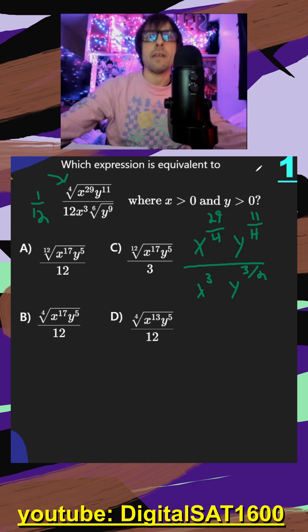And then another exponent rule. And that is when we divide bases, we subtract exponents. So it turns into a fraction problem. We can do 29 over four minus three over one. And again, we just want common denominators to subtract fractions.